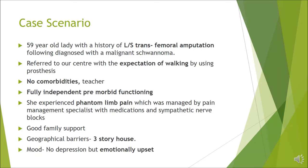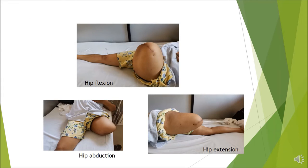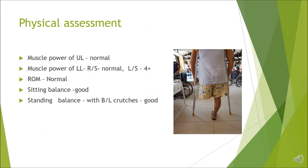She was managed by a pain management specialist with medications and sympathetic nerve blocks. She has good family support but lives in a three-story house. Even though she is not depressed, she was emotionally upset. During physical assessment, the stump was healthy without any skin complications, but the stump shape was bulbous rather than the ideal cylindrical shape. There were no joint contractures — hip flexion, abduction, extension and all movements of the hip joint were within normal ranges. Muscle power was four-plus on the amputation side and the other three limbs had normal power. She had good sitting balance and good standing balance with bilateral crutches.